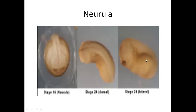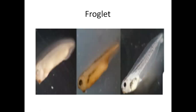Maine aapko pehle bhi bataya hai ki yeh jelly ke andar hi rehta hai - neurula aur tailbud tak yeh jelly ke andar rehta hai. Aur wahan se jab bahar nikalta hai, hatching hoti hai, tab yeh larva kehlata hai - tadpole larva - yeh froglet larva. This is froglet - this has come out of the membrane. This is froglet after the tailbud stage.